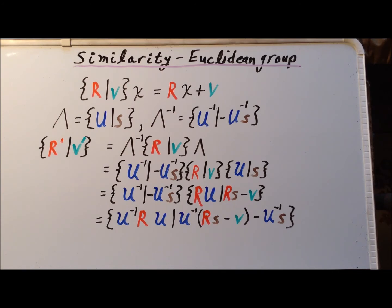Again, applying our previous results, we see that if we have U to the minus 1 minus U to the minus 1 S on R U slash R S minus V, that the operator part, the matrix part, becomes U to the minus 1 R U, which will look very familiar if you are used to similarity transformations with matrices. And then the vector part is going to be the complicated expression U to the minus 1 of R S minus V minus U to the minus 1 of S.